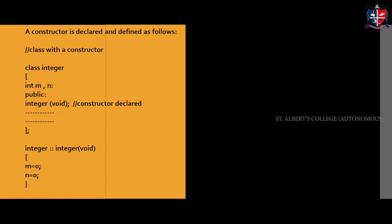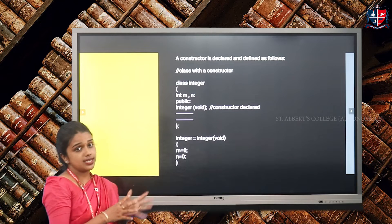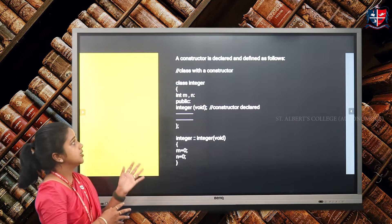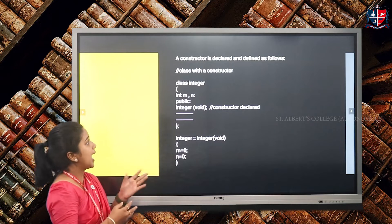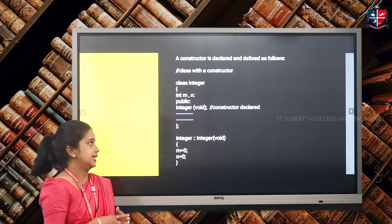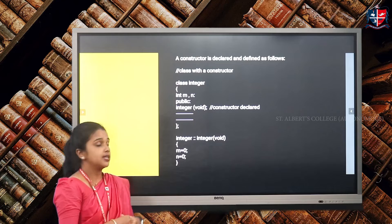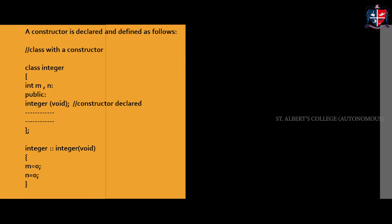We will see how a constructor is declared inside the class. We have a class called integer with two data members — two variables m and n. In the public section, we have the constructor declared. Here you can see the constructor has the same name as the class name. Our class name is integer and this function also has the same name — integer.